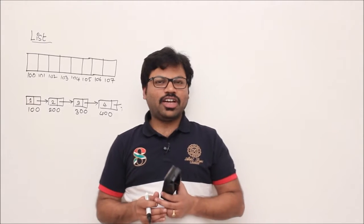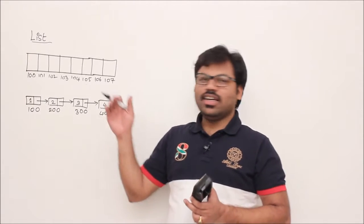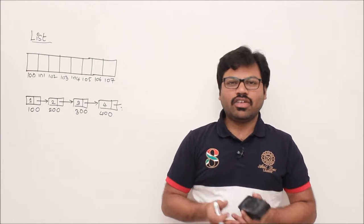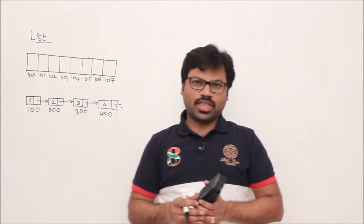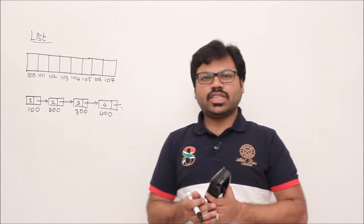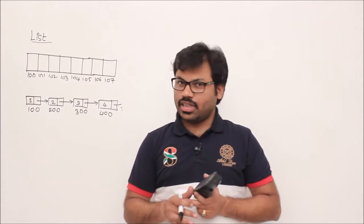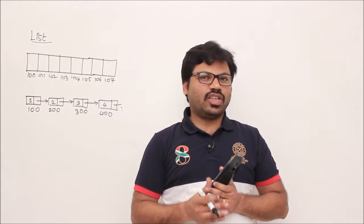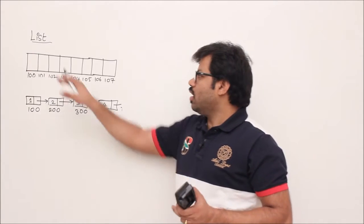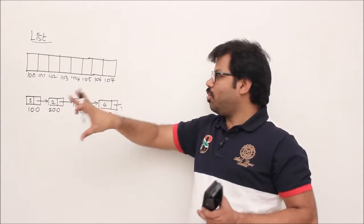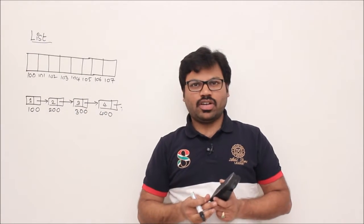In this session I would like to talk about LIST. LIST is a collection of objects, especially a sequence of objects. When you have a sequence of objects, how do you store them in a computer? There are two ways to store them: one model is the contiguous memory model, and the second model is the non-contiguous memory model.